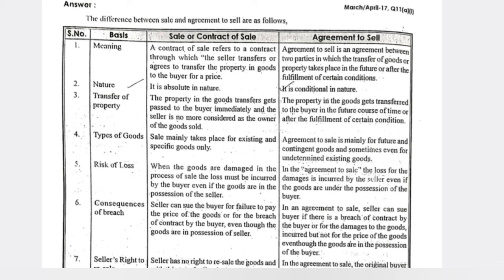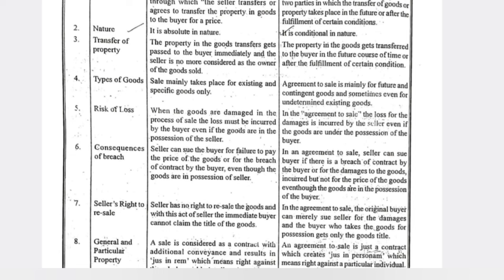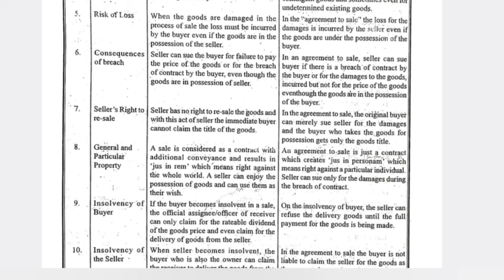The meaning of sale is the transfer of goods and services to a buyer for a price. Agreement to sale means we are agreeing to a sale — for example, after three months I will sell this product to you, or after one year I will sell this house to you. Nature: sale is absolute in nature; agreement to sale is conditional in nature. Transfer of property: in a sale, the property in goods passes to the buyer immediately and the seller is no longer considered the owner.